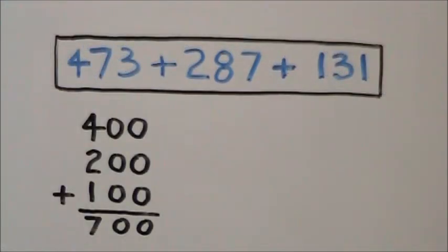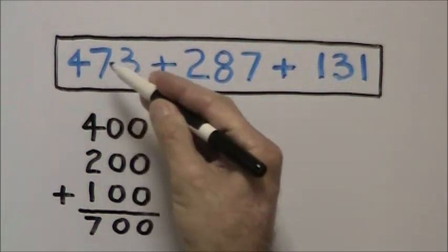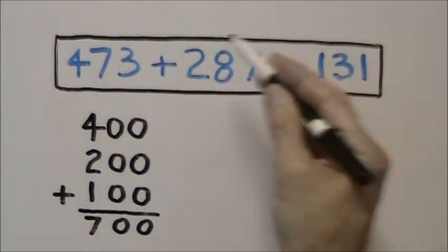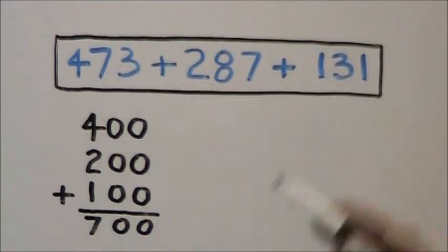What we're going to be doing is using our place values of hundreds, tens, and ones and adding them up separately and then totaling them at the end.